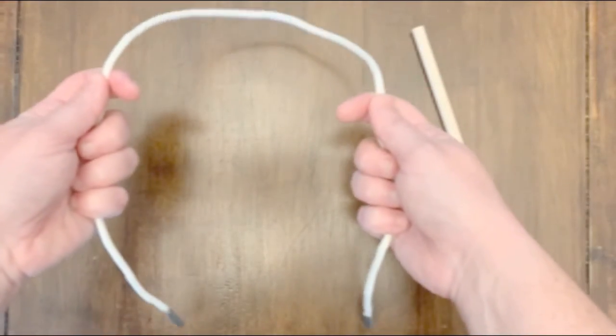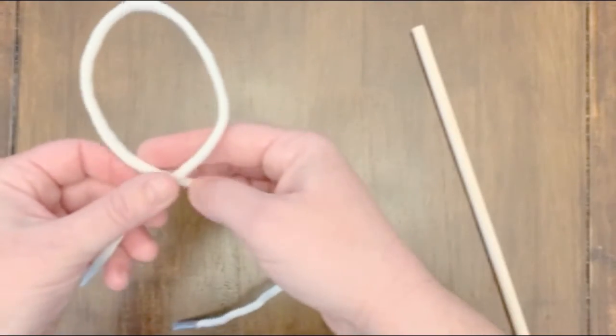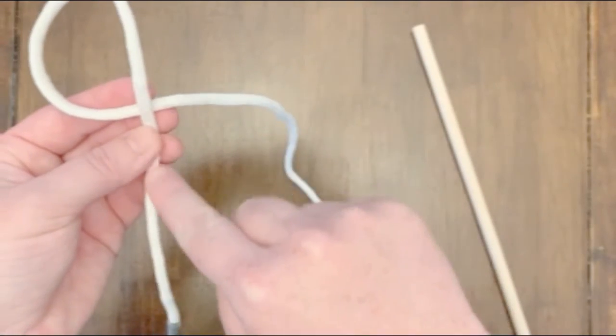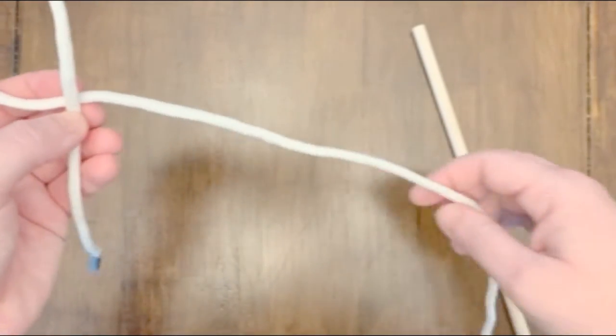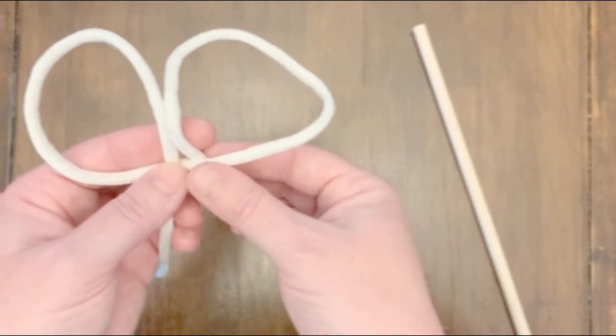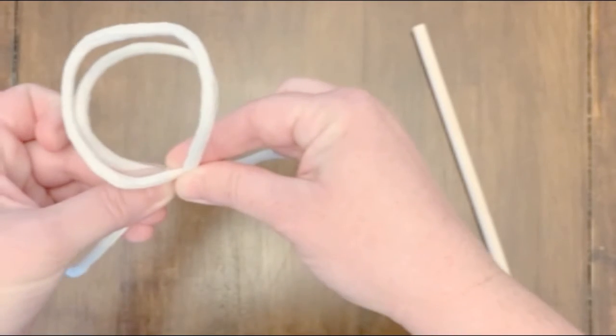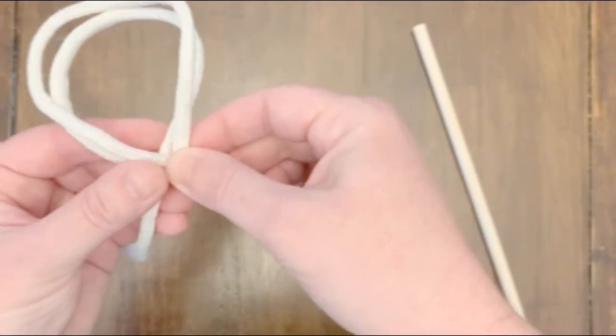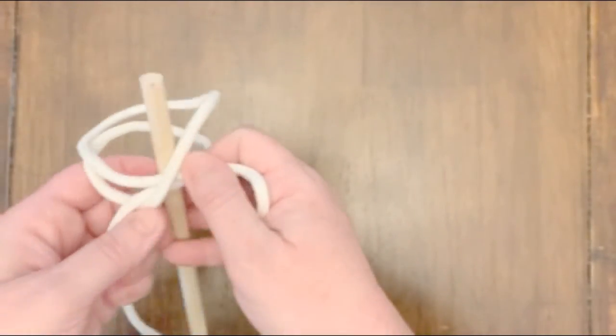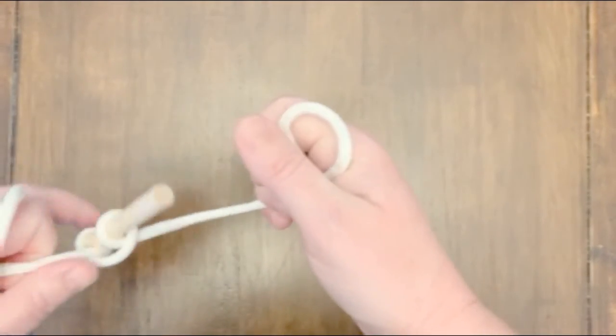Start with kind of a horseshoe shape. Make a loop going this way with the tail going over. Make a loop this way with the tail going under, and then cross those. Slide it onto your pole, and just pull both ends to tighten it.